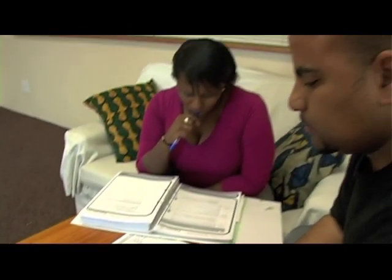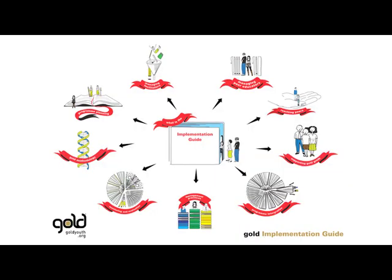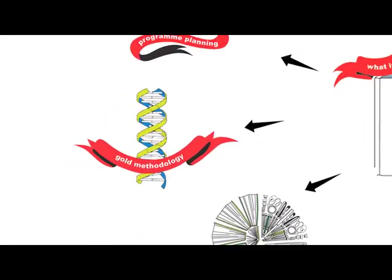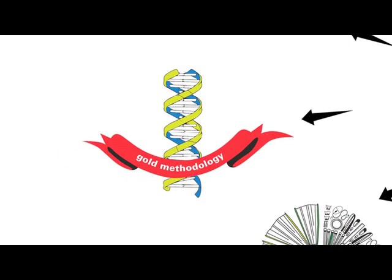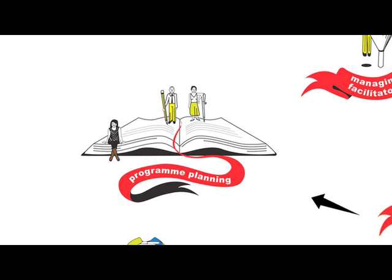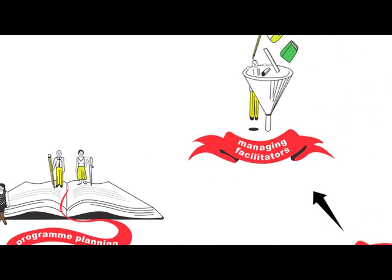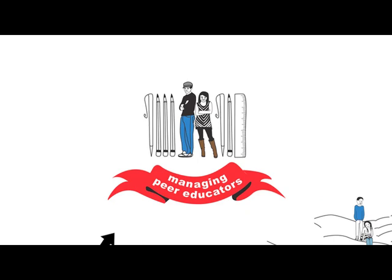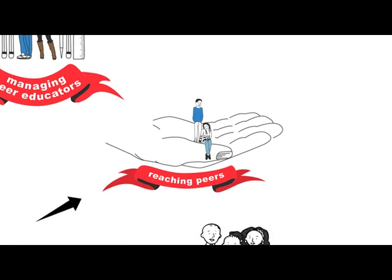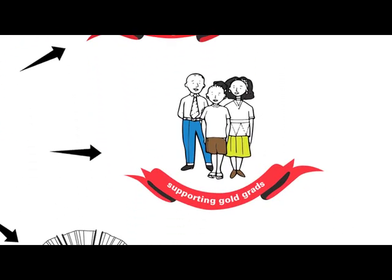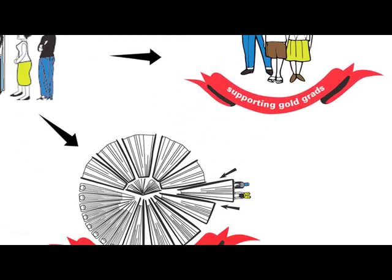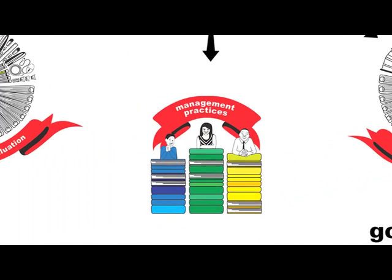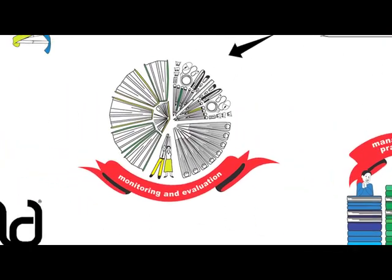The Gold Peer Education Programme is made up of nine elements: Gold Methodology, Programme Planning, Managing Facilitators, Managing Peer Educators, Reaching Peers, Supporting Gold Grads, Programme Integration, Management Practices, and Monitoring and Evaluation.